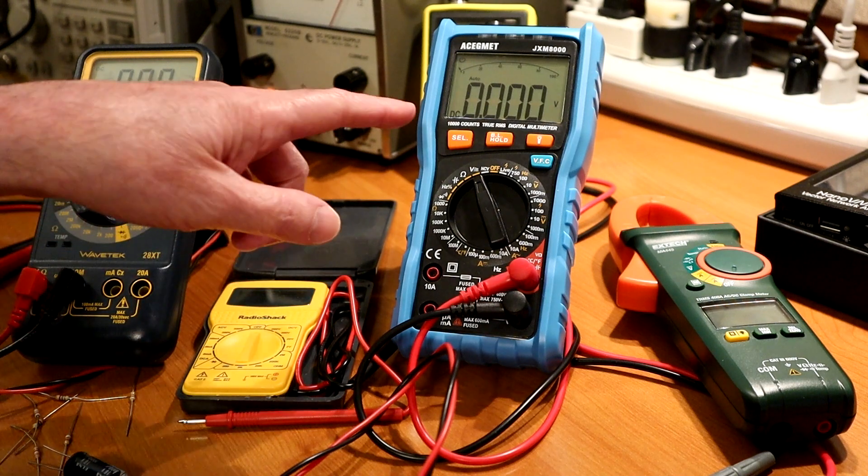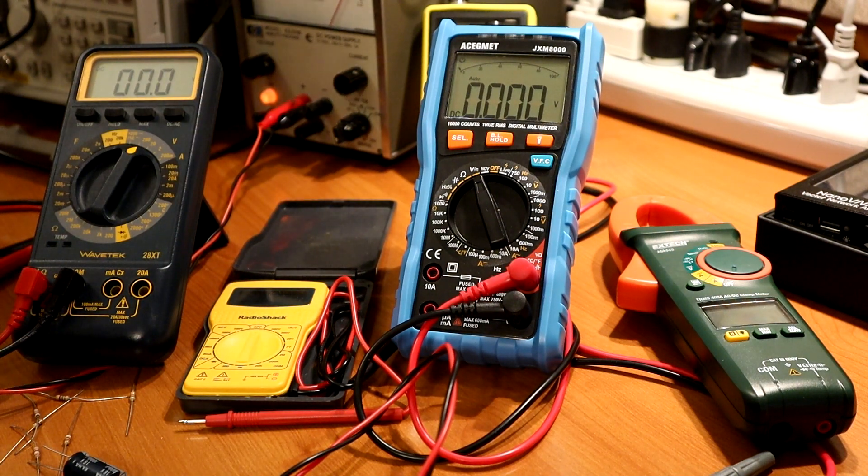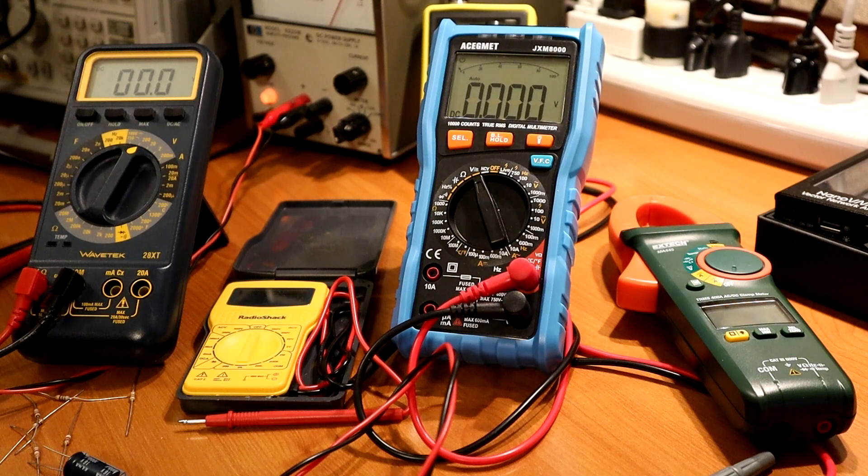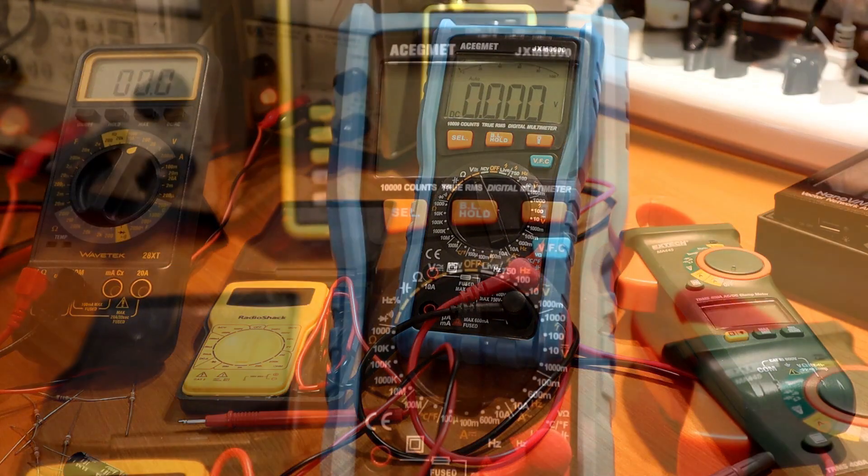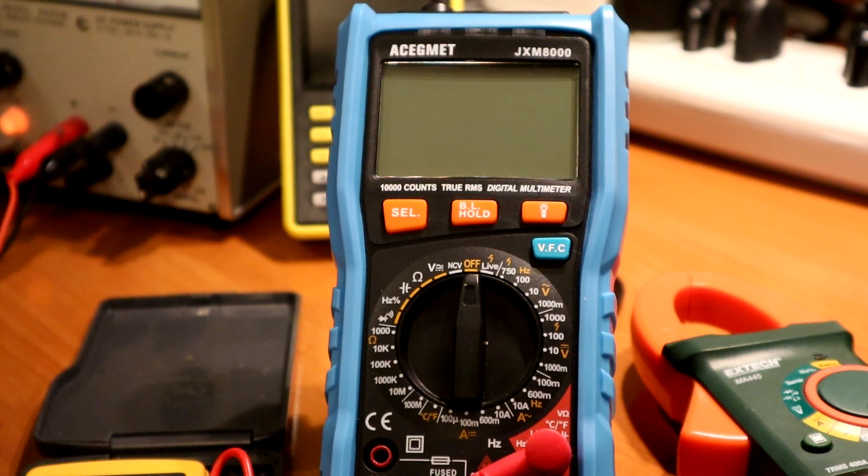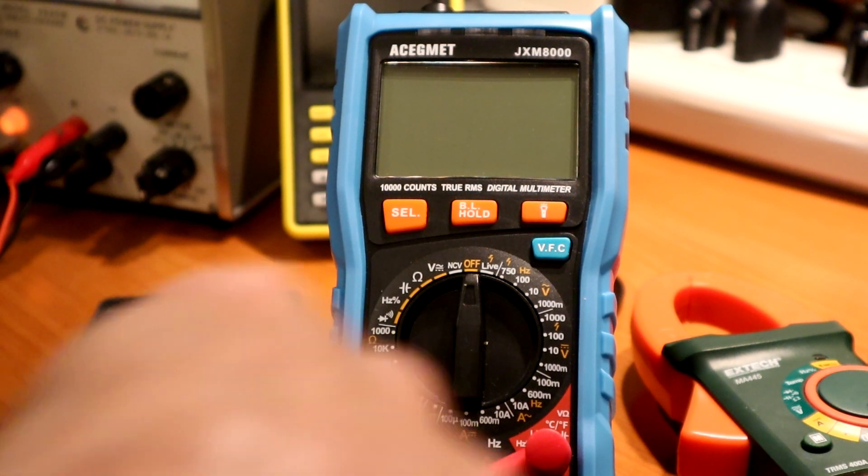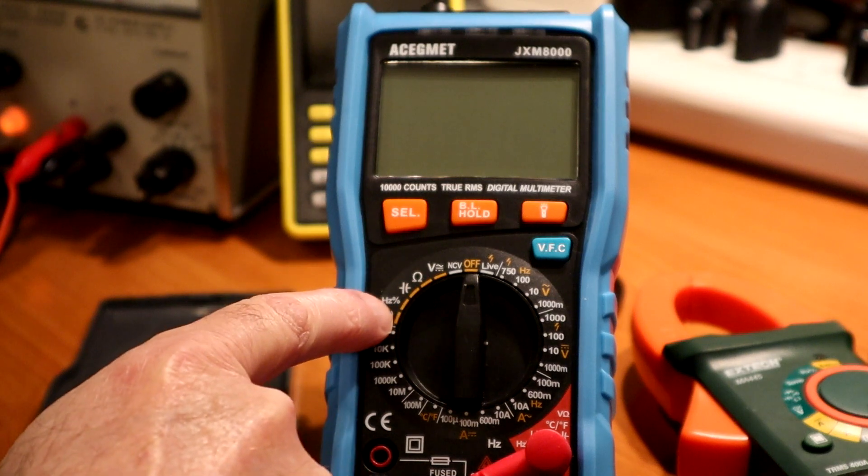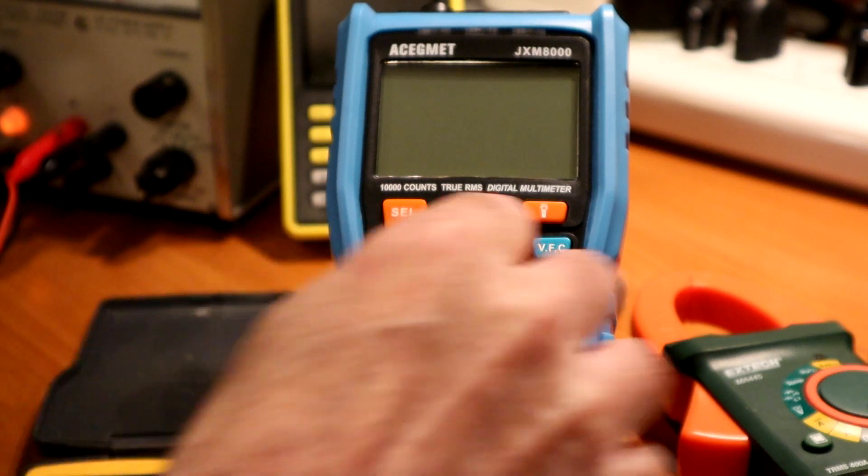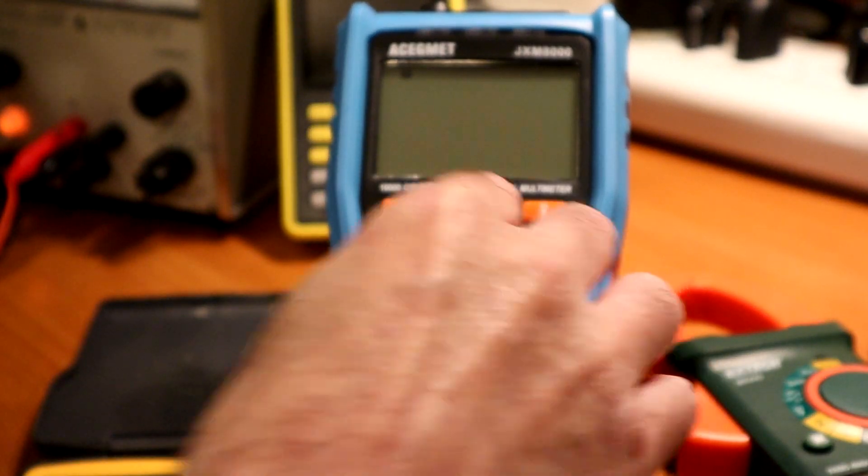And if we zoom in on the new meter, the JXM8000 model, we'll be able to go through the functions. So this meter has both automatic and manual ranges. Over here, there are the automatic ranges. And I will turn it on. You can see how quick it comes on.